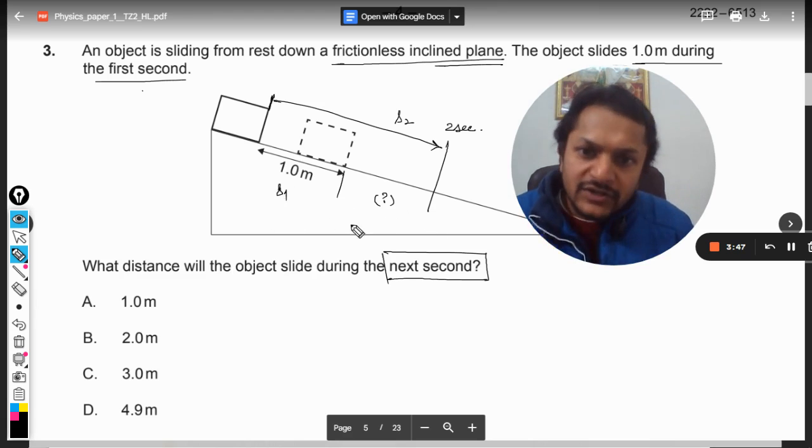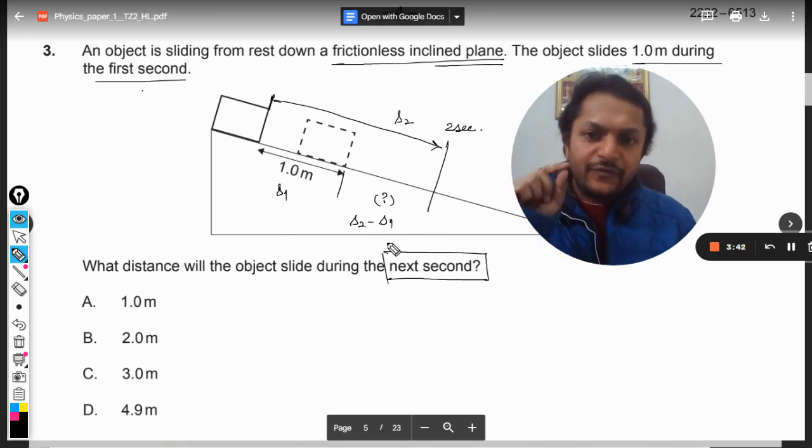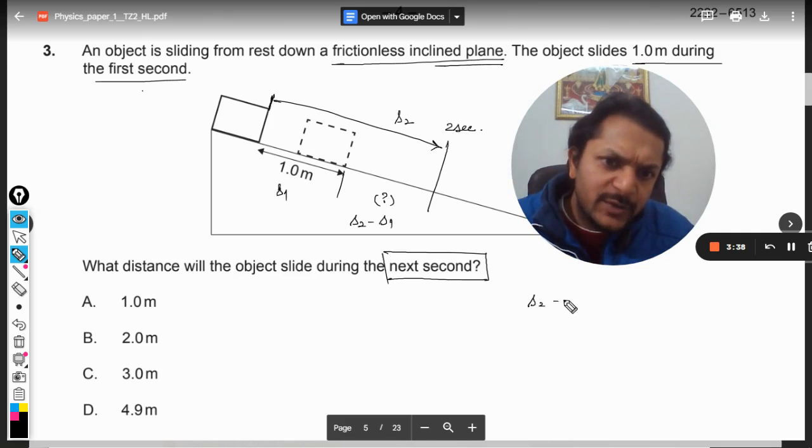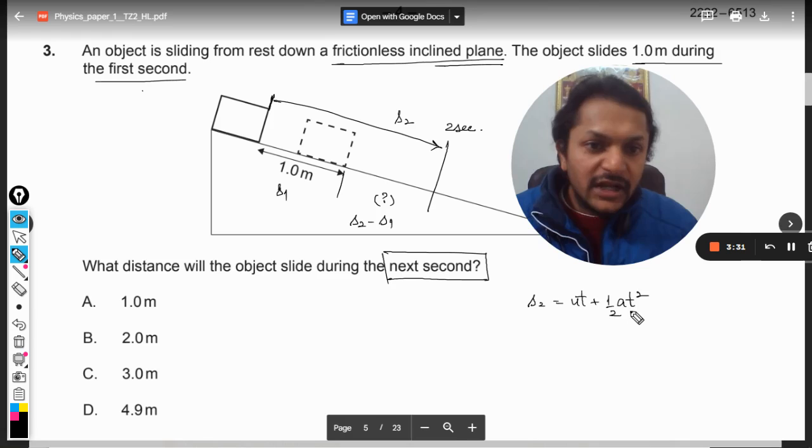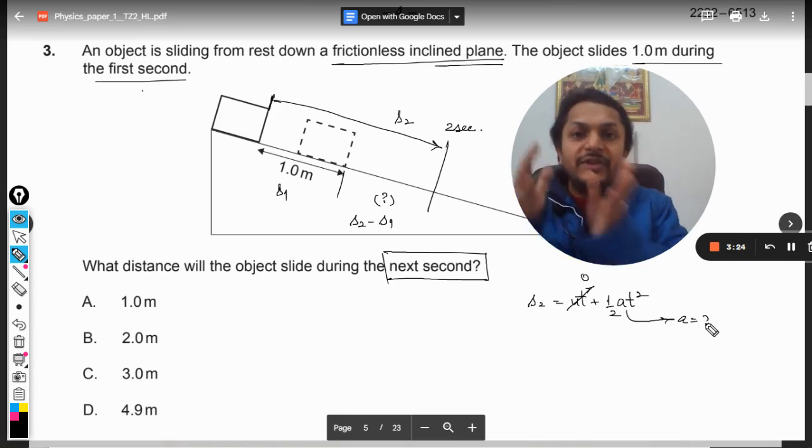So our answer will be s2 minus s1. s1 is given as one meter and for that we need to find s2. Now s2 is ut plus half at squared, but u can be taken as zero. We do not know acceleration, so from the first set of data we have to find the acceleration.